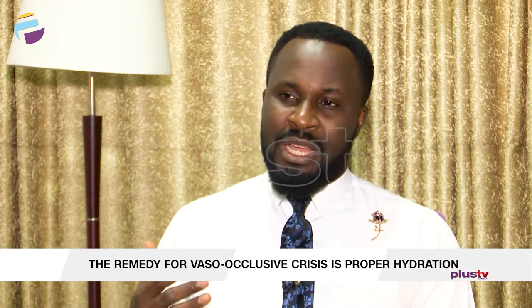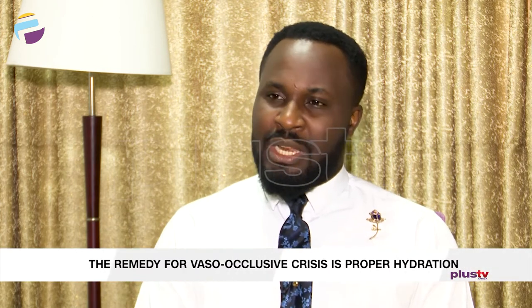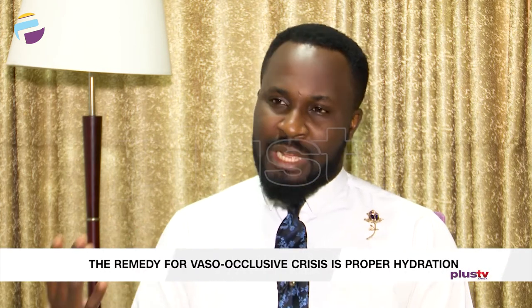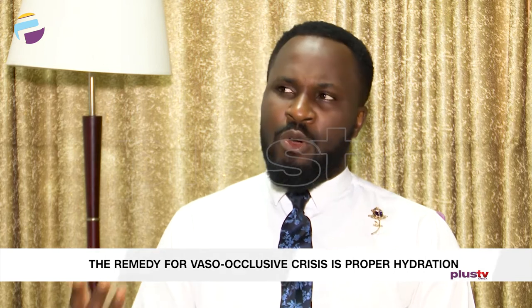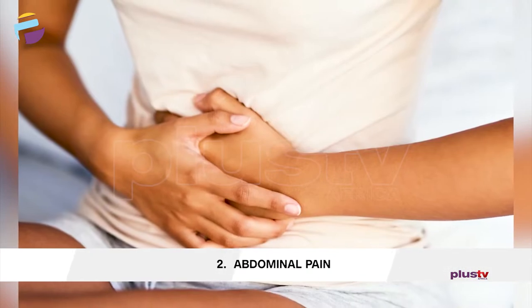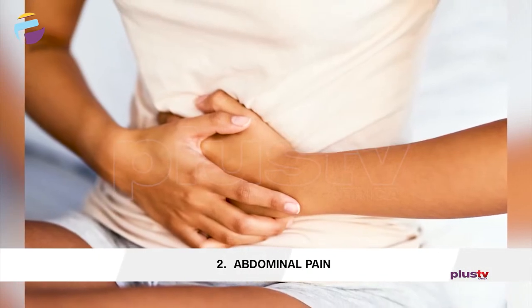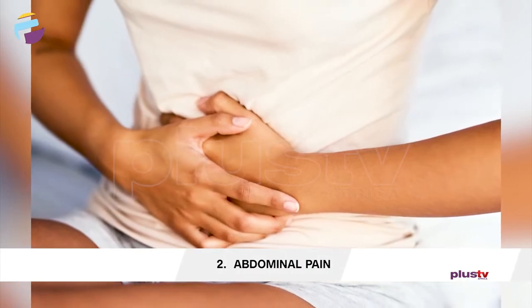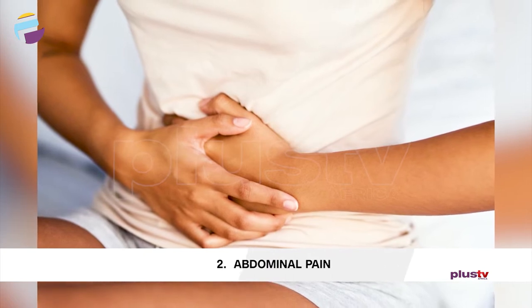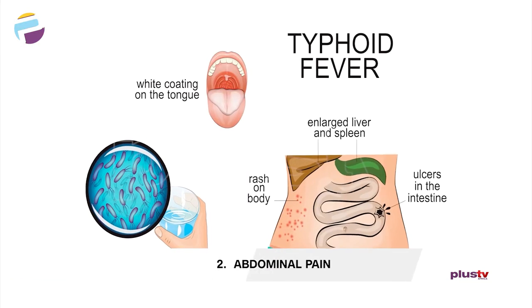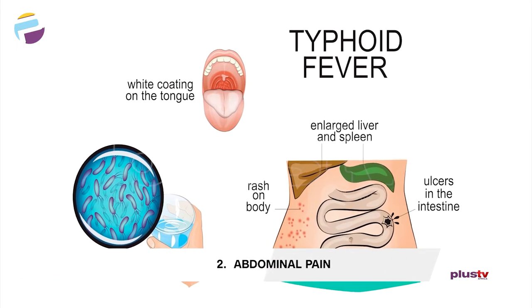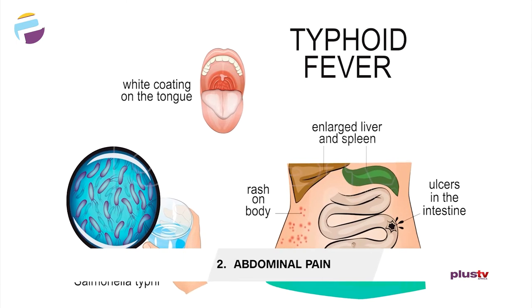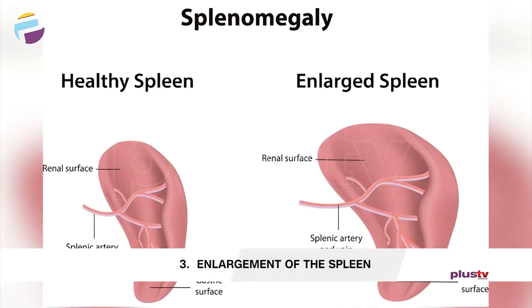Other symptoms include abdominal pain. Sickle cell patients are usually prone to salmonellosis, which is typhoid fever. They are also very prone to an enlarged spleen.